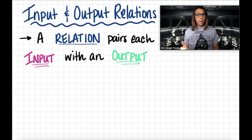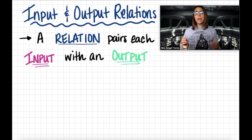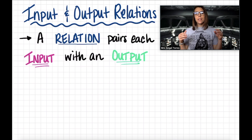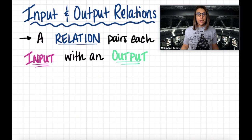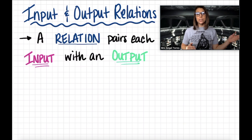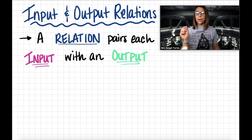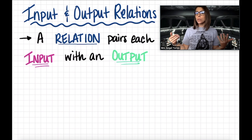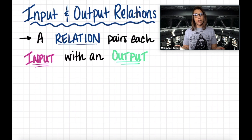The first vocabulary word you're going to learn here is a relation. A relation pairs each input with a specific output. Think about how you are related to different people in your family — you're related to your sister or brother in a different way than you're related to your aunt or uncle. The same works in math. Each input has a very specific relation to its output, and as we'll learn later on, some of those relations are also called functions.